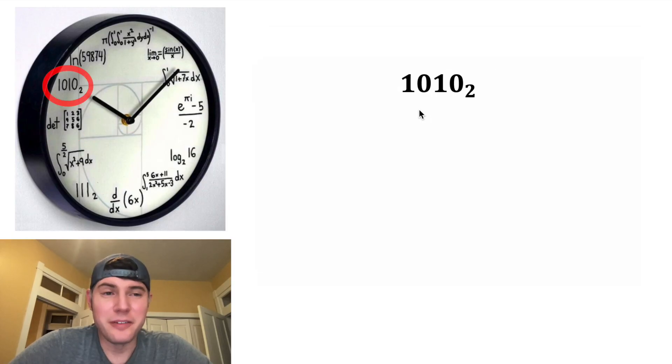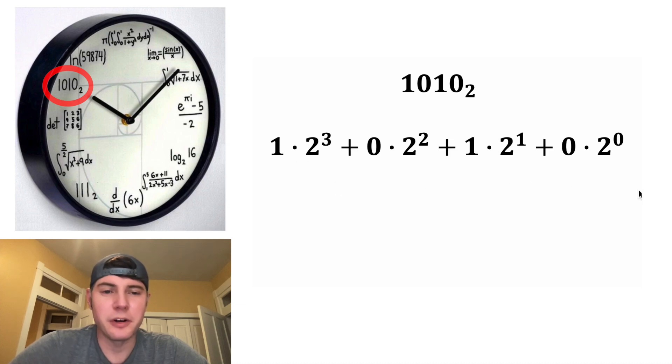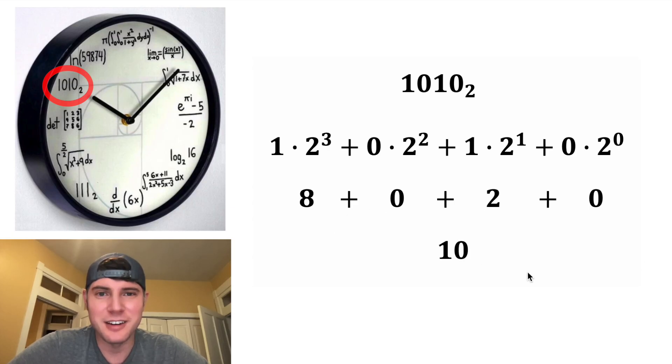For the 10 o'clock hour, we have another binary. It's one, zero, one, zero. So we can break out the digits. First one is two to the zero. Then we have two to the one, two to the two, and two to the three. And we're going to add them all together. One times two to three is eight. Zero times two squared is zero. One times two to the one is two. And zero times two to the zero is zero. And eight plus two is equal to 10. So that's why this thing is for the 10 o'clock hour.